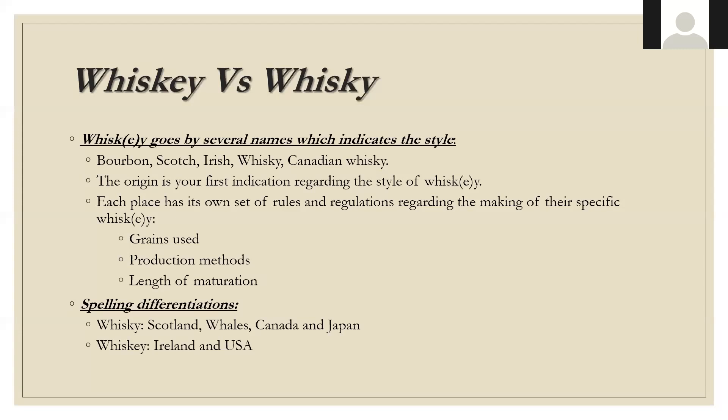Each place has its own set of rules and regulations regarding what types of grains can be utilized, the production methods, and the length of maturation. As a spelling differentiation: whiskey without an 'e' is typically Scotch, Welsh, Canadian, and Japanese; whiskey with an 'e' is more common in Ireland and the United States. There are exceptions — Maker's Mark notably leaves the 'e' off domestically.